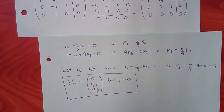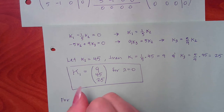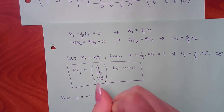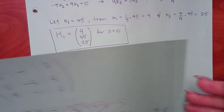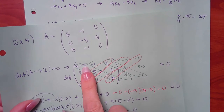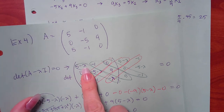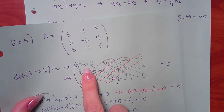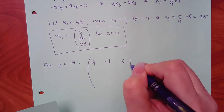Now for lambda equal to negative 4: go back to the matrix with minus lambdas and plug in negative 4. Five minus negative 4 is 5 plus 4, giving 9. The off-diagonal entries stay the same.